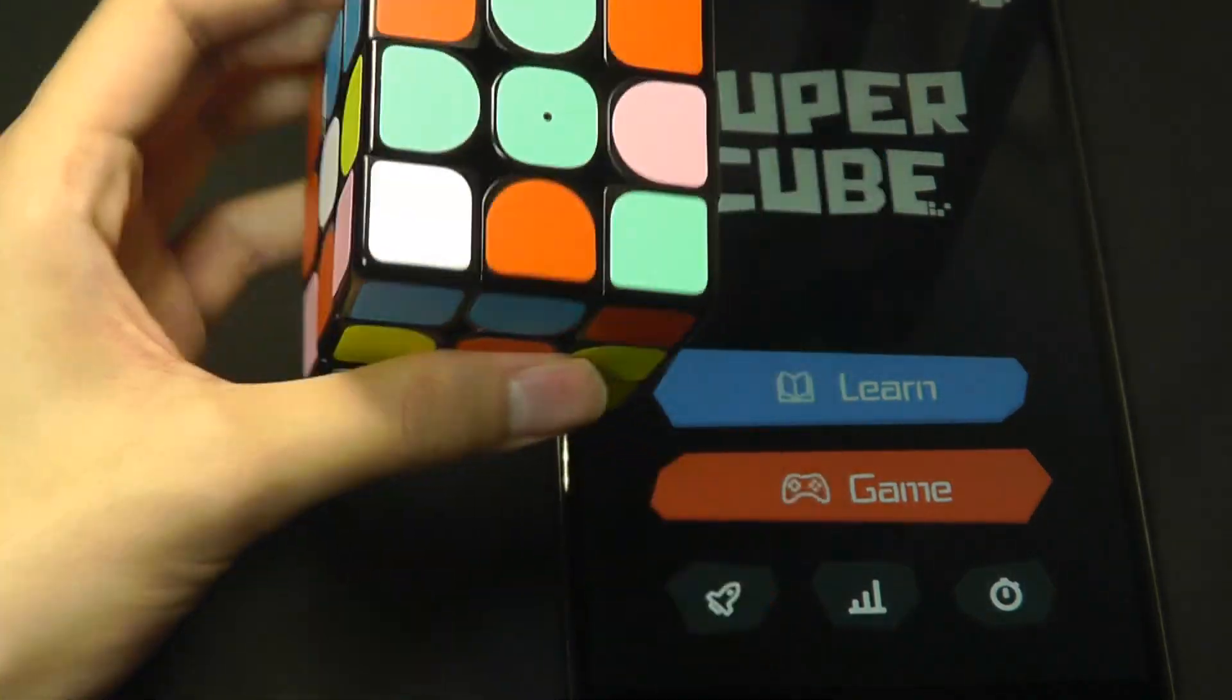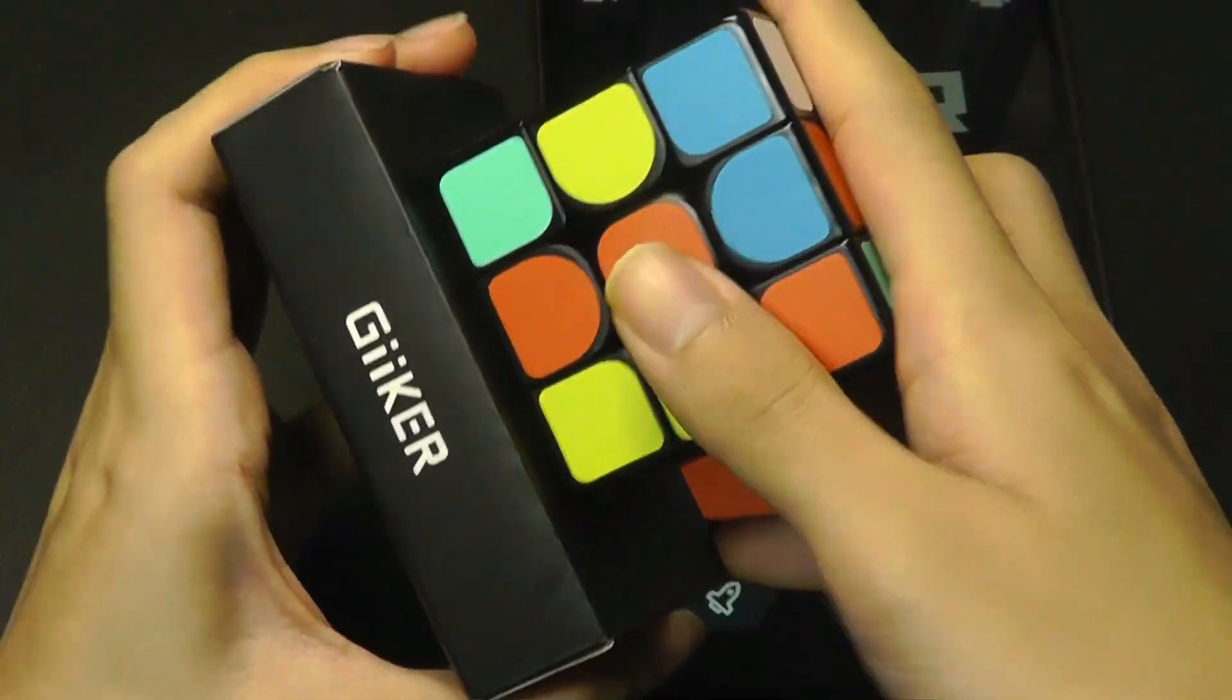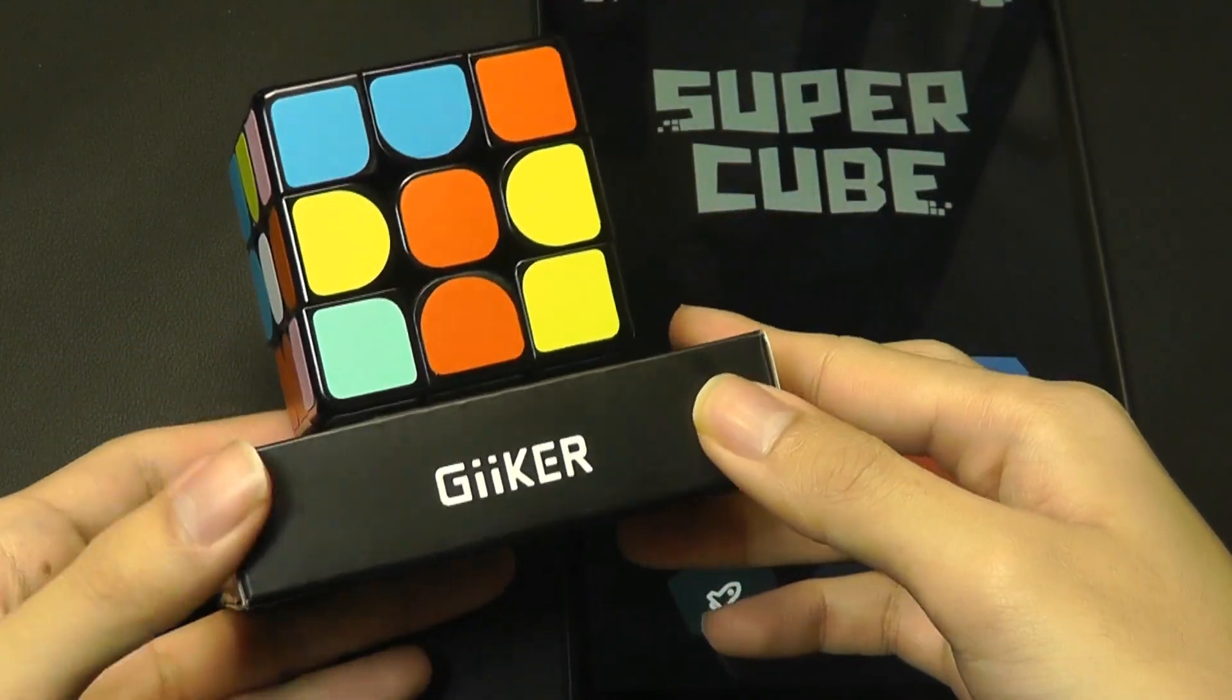You can check out more details in the links down below. But for now, that's been our video. Thanks for watching here at OSReviews. That's been our unboxing, hands-on review of the Xiaomi Geiger Smart Rubik's Cube.